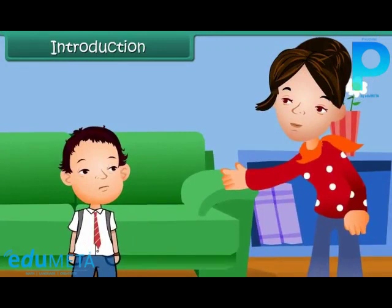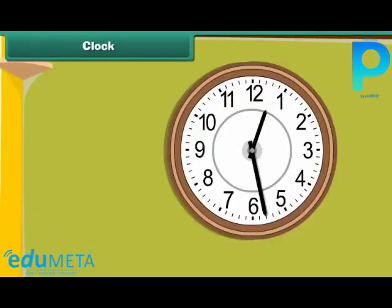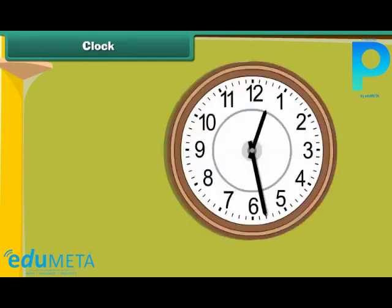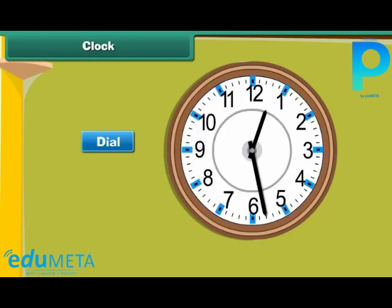In this lesson, you will learn about time. Look at this clock. The visible side of the clock is known as its face. It has a dial. The dial has 12 equal divisions.